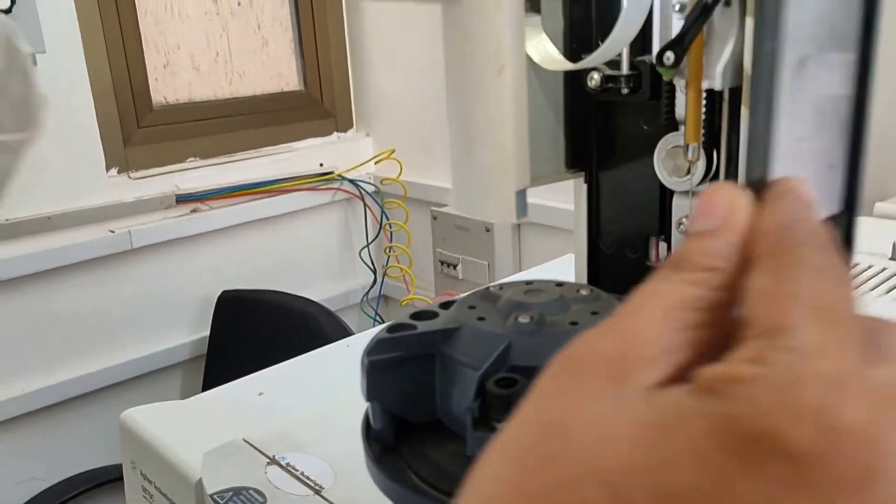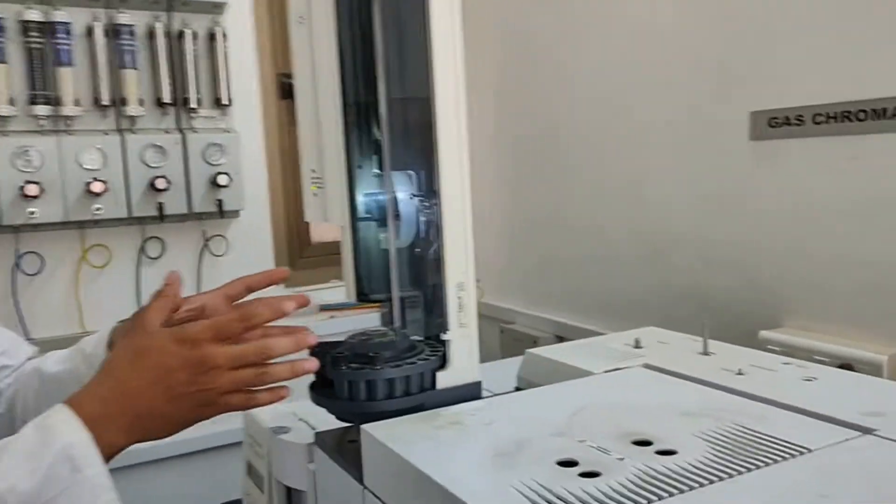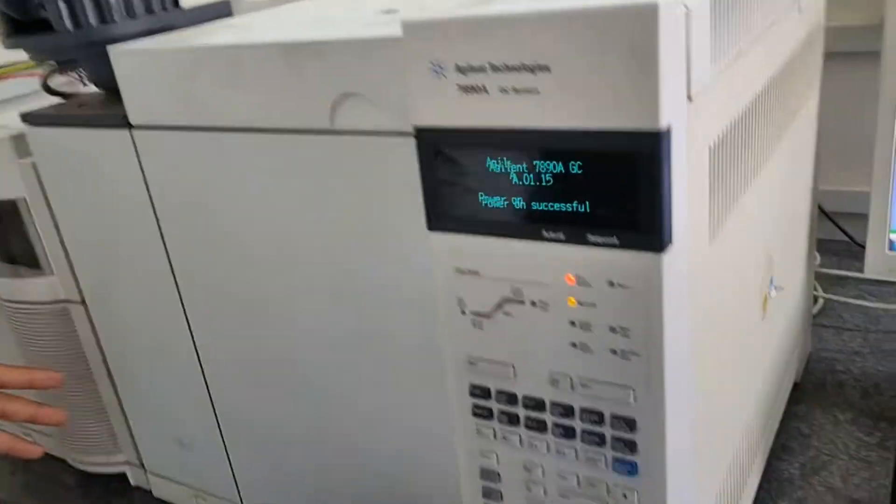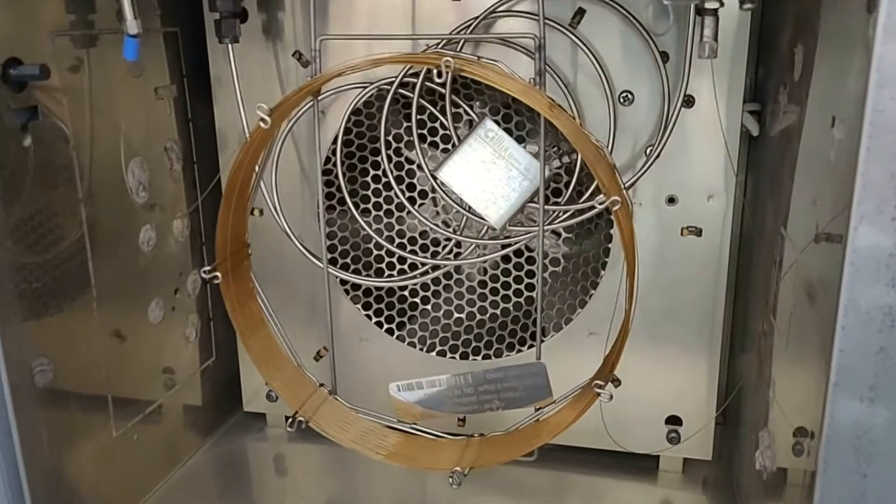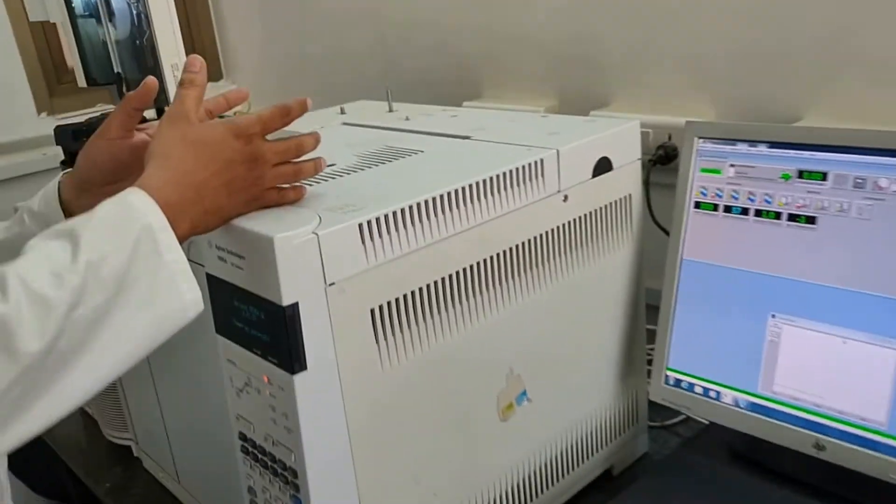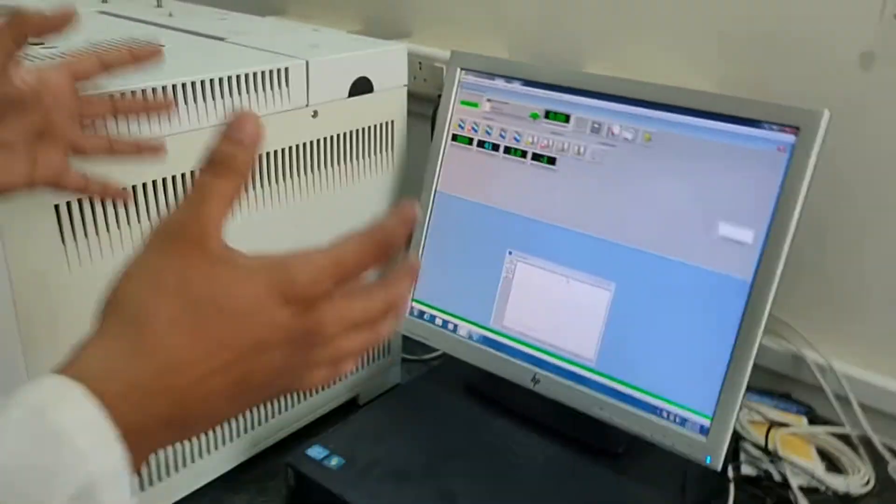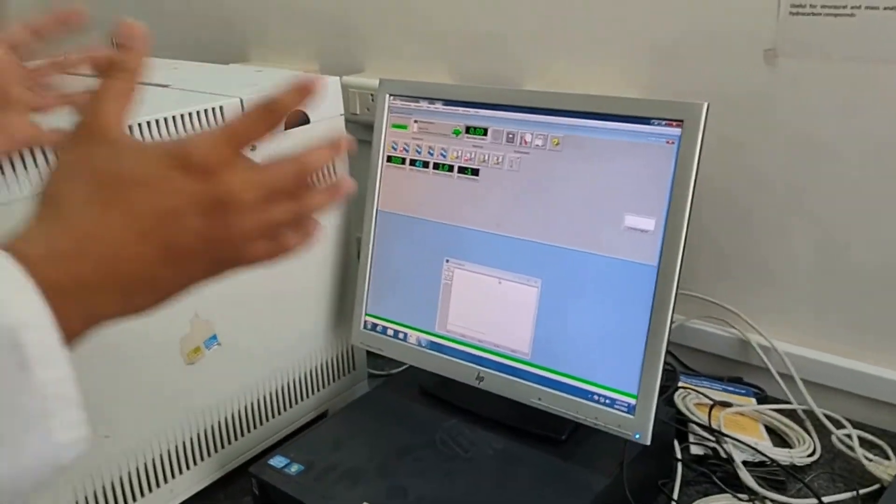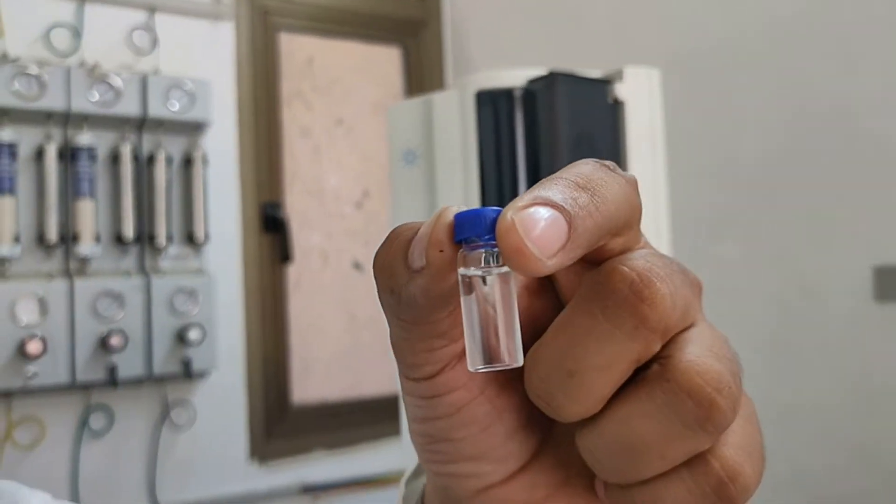Now this is the inlet part. After that our sample is inlet here with the instrument. Now it is going to the column part. This is our column in our instrument. You can see here, the two columns are connected. Now then it is going to the FID detector part, and then we are getting the signal catcher by using computer system software tool. We are operating this instrument. Now this is the sample bottle, it is called the GC vial. Its size is 1.5mm.